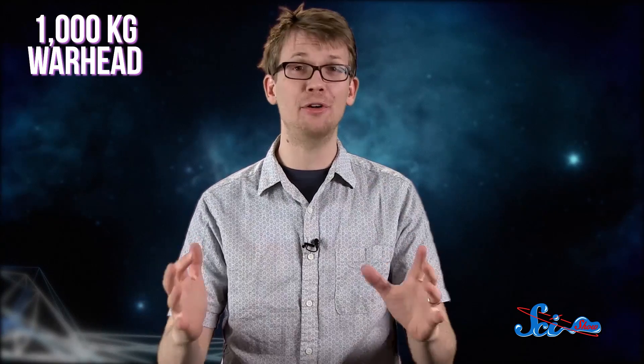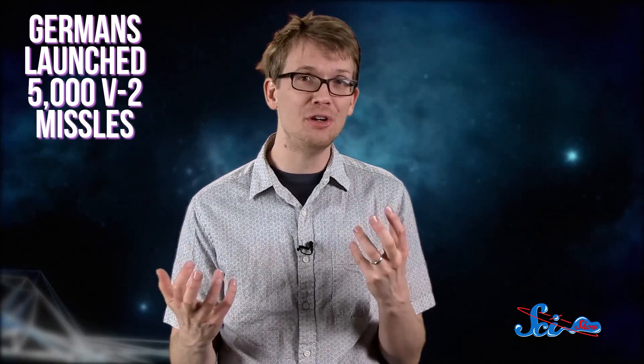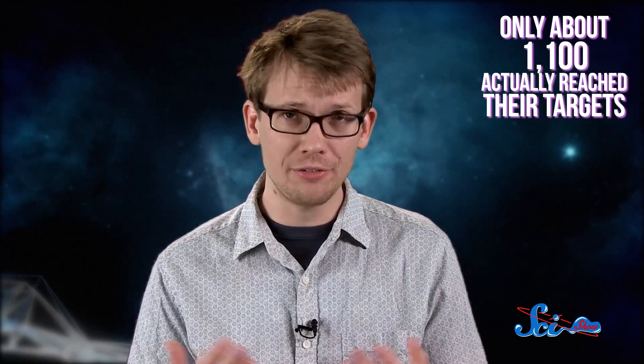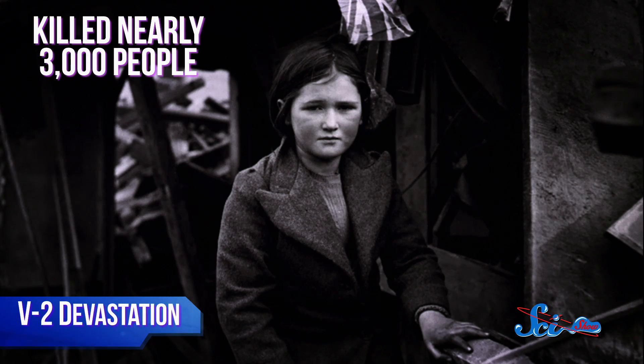As military weapons go, the V-2 was terrifying, but not always accurate. While the Germans launched 5,000 of the missiles toward Western Europe, only about 1,100 actually reached their targets. Still, the V-2 was believed to have killed nearly 3,000 people.